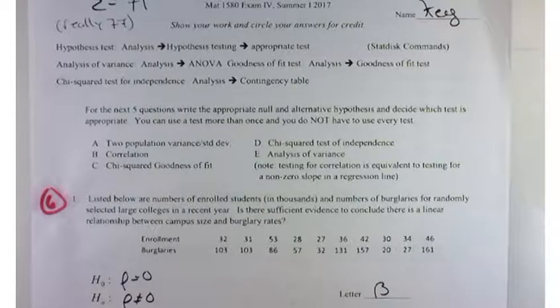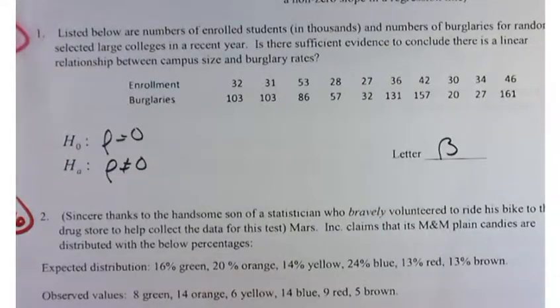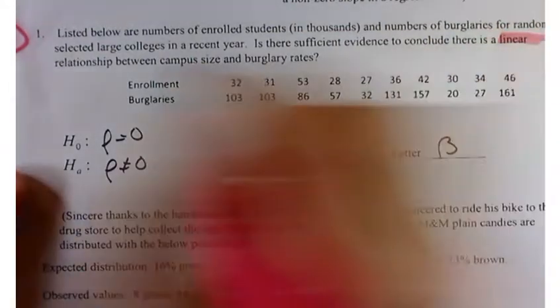Let's review some of these things. This is listed below are the number of enrolled students in thousands and number of burglars for randomly selected large colleges in a recent year. Is there sufficient evidence to conclude that there's a linear relationship?